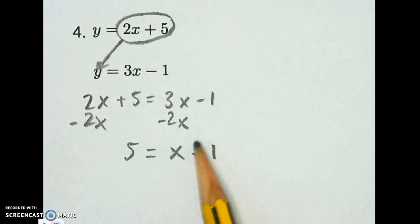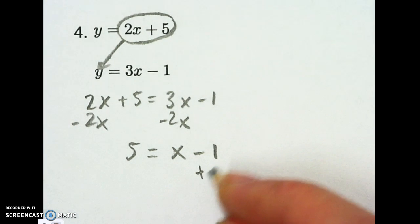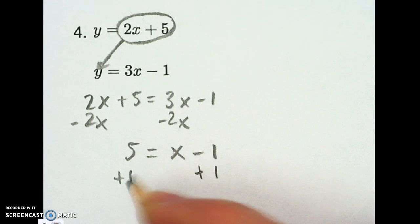Last piece, I need to get x by itself, so I'll add the 1 to get rid of it on that side. So I've got x equals 6.